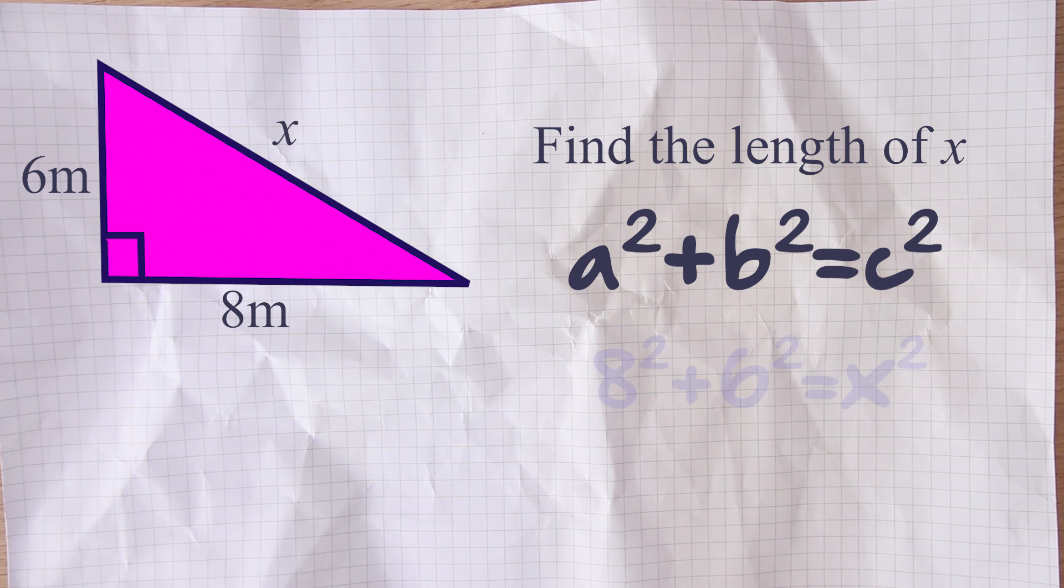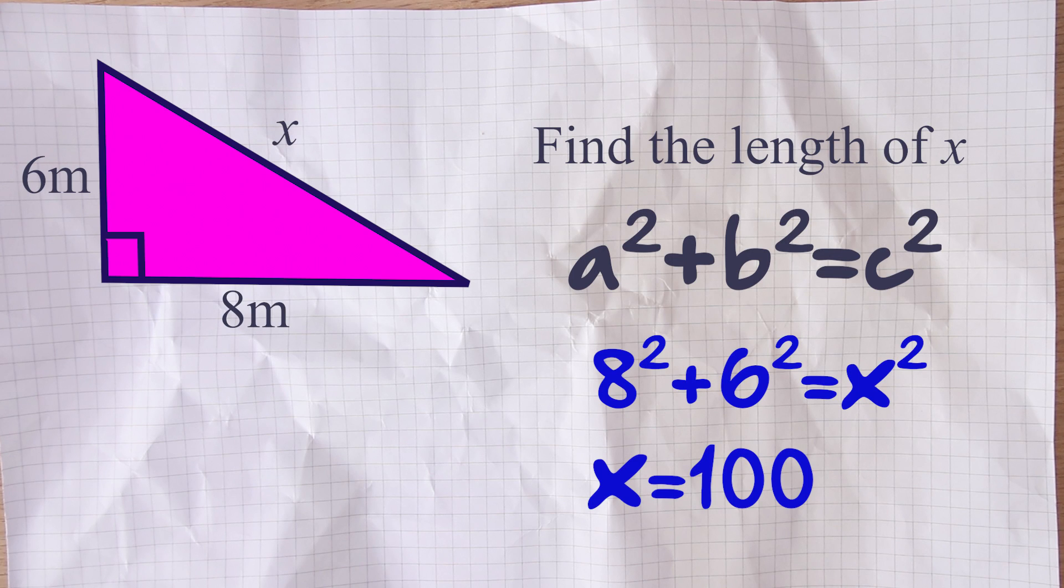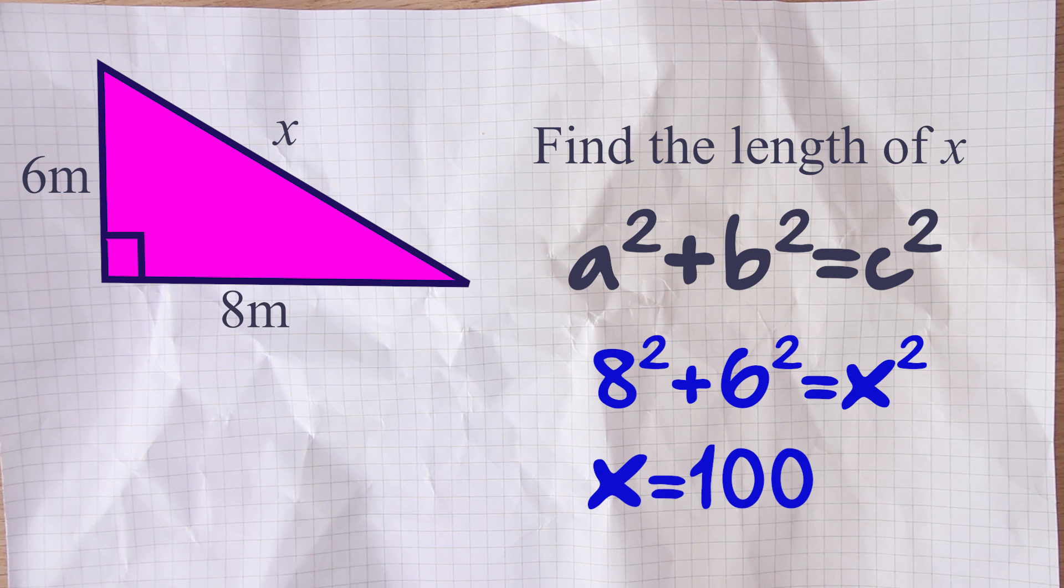We remember Pythagoras theorem, a squared plus b squared equals c squared. So we do eight squared add six squared, and we do that on our calculator. Eight squared, add six squared, and that's 100. Boom, we found out the length of the hypotenuse, it is 100. And we move on to the next question. Now I made a deliberate mistake there. I should have square rooted the answer at the end. So that hypotenuse is actually the square root of 100, which is 10. But I forgot to do that, and we make these mistakes.